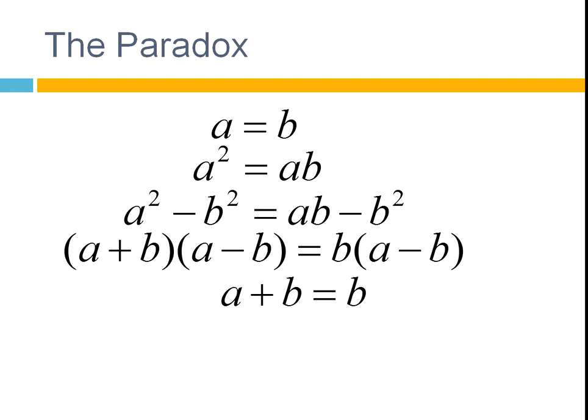And then once A equals B up here, we can substitute in B, so we get 2B equals B, and we'll get B equal to 1, 2 times 1 equals 1.